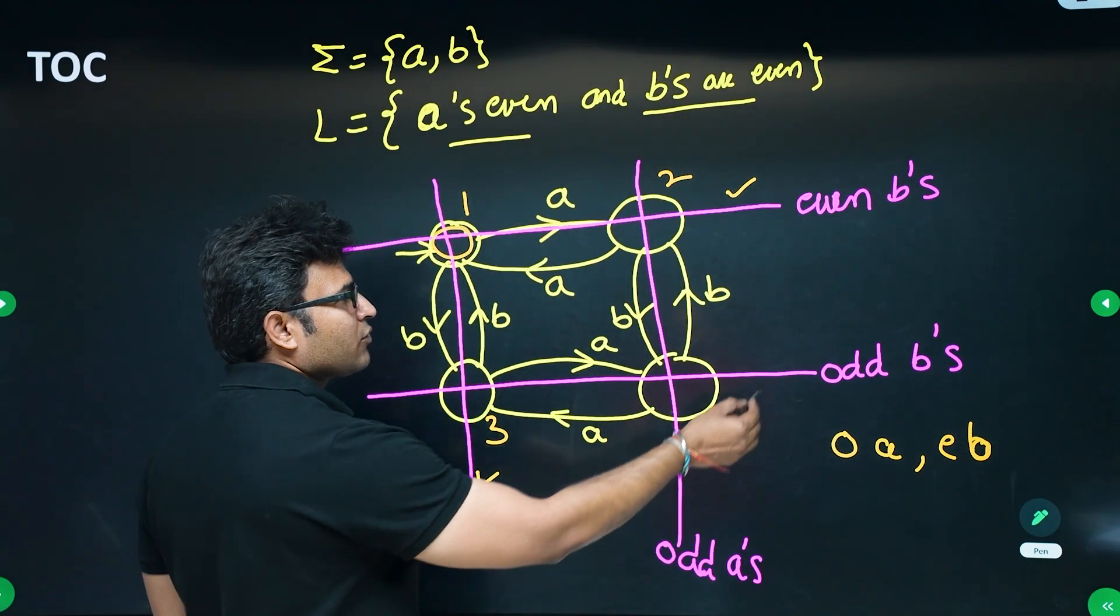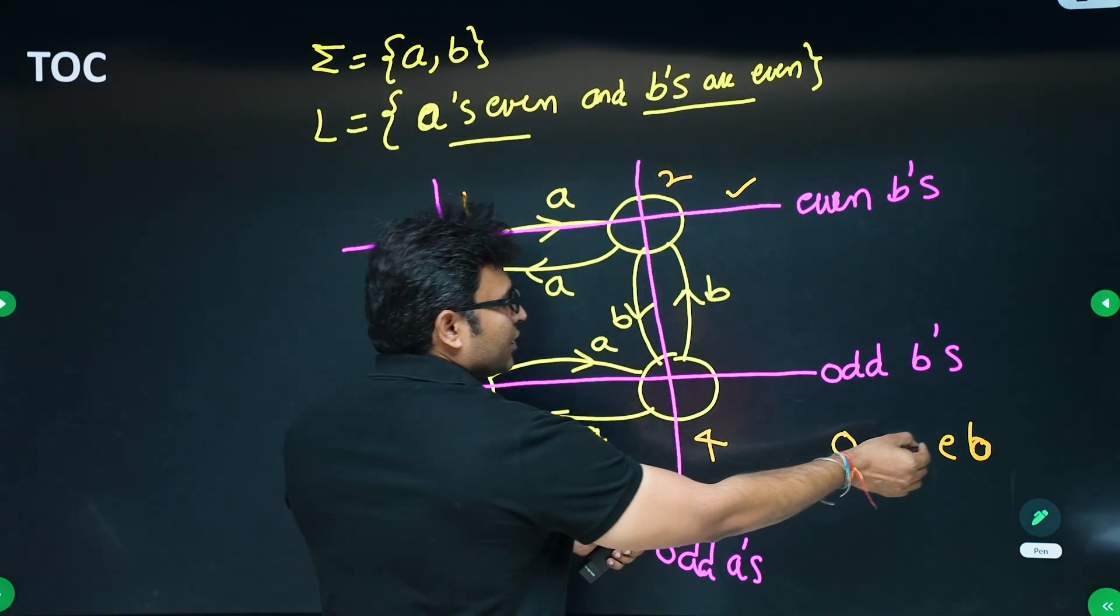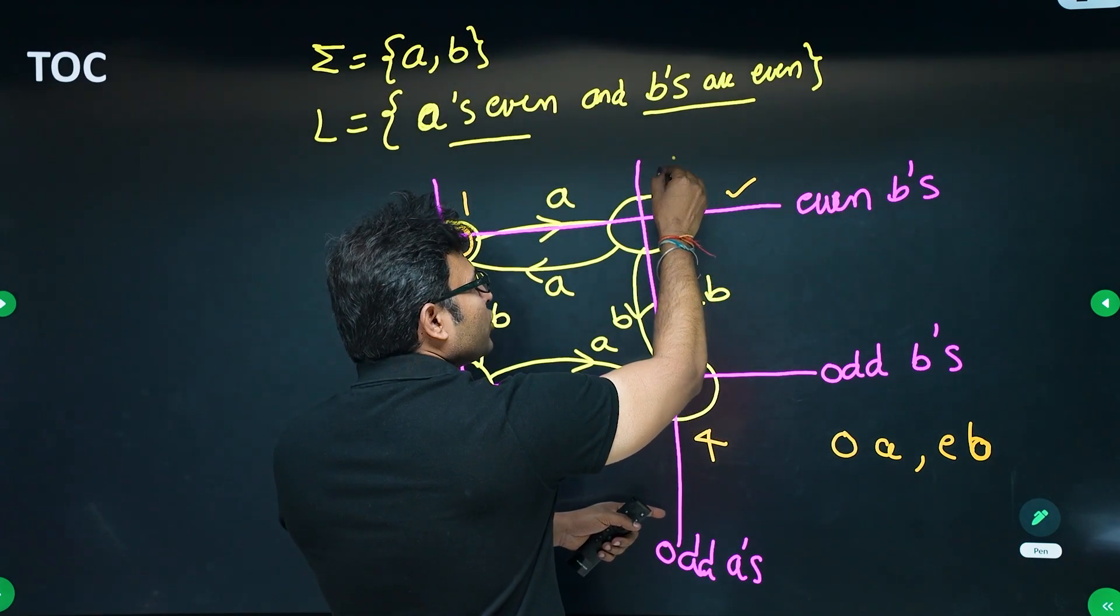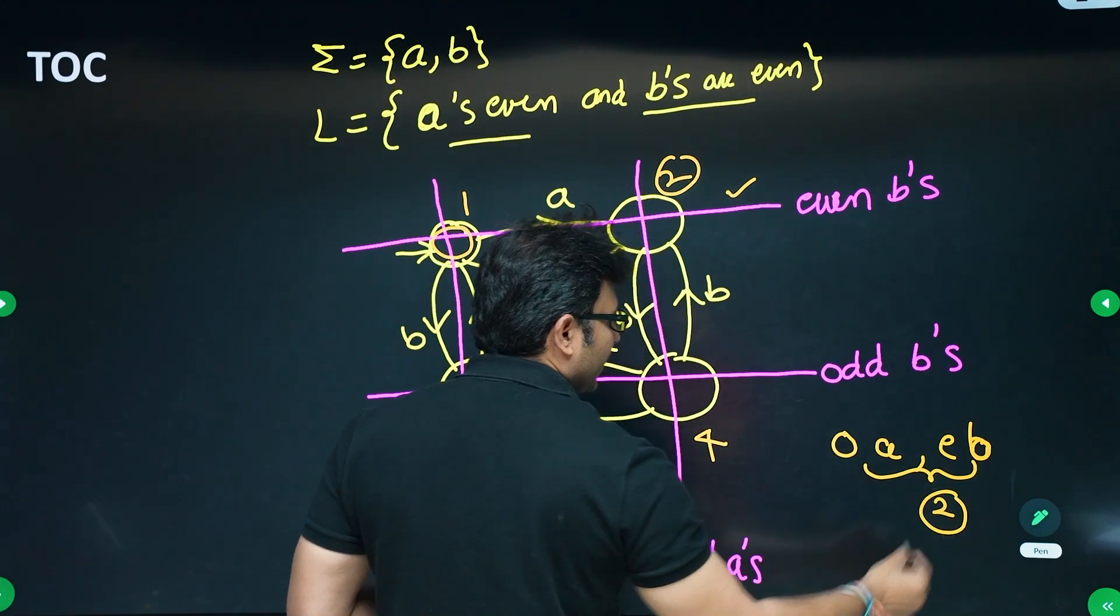So where is odd number of a's? Odd number of a's is here, this line. Where is even number of b's? Even number of b's is this line. So this is the final state. Two is the final state. In this case, two is the final state.